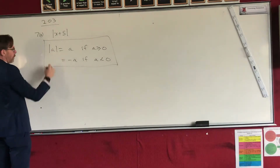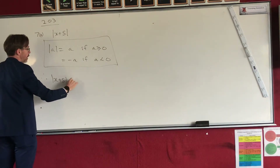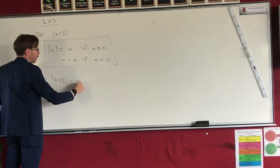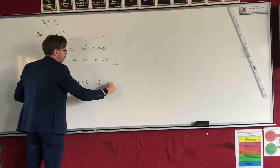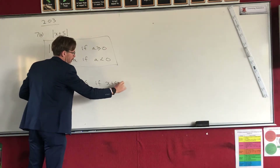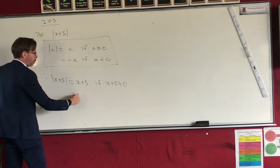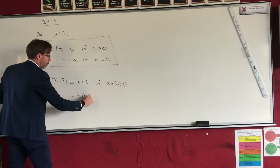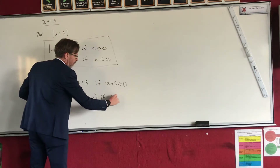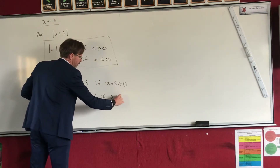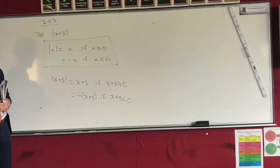So the absolute value of x plus 5 equals x plus 5 if x plus 5 is bigger than or equal to 0, and it's equal to minus brackets x plus 5 if x plus 5 is less than 0. That's pretty much the answer.